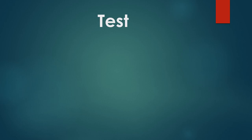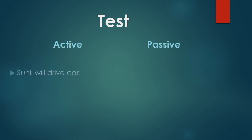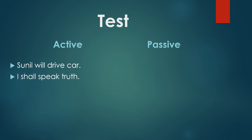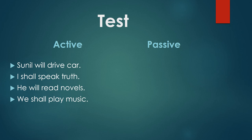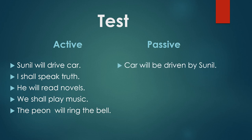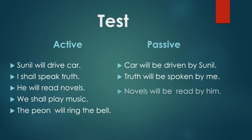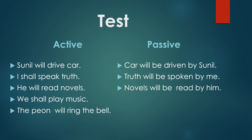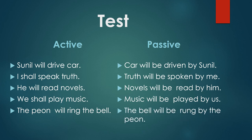Here is a test for you to know how much you have understood. Active sentences: 'Sunil will drive car', 'I shall speak truth', 'He will read novels', 'We shall play music', 'The pion will ring the bell.' Now the passive voice answers: 'Car will be driven by Sunil', 'Truth will be spoken by me', 'Novels will be read by him', 'Music will be played by us', 'The bell will be rung by the pion.'